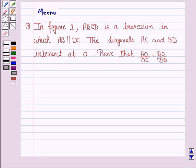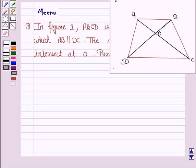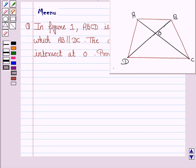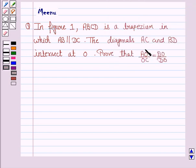It says in figure 1, this is figure 1, ABCD is a trapezium in which AB is parallel to DC. The diagonals AC and BD intersect at O.